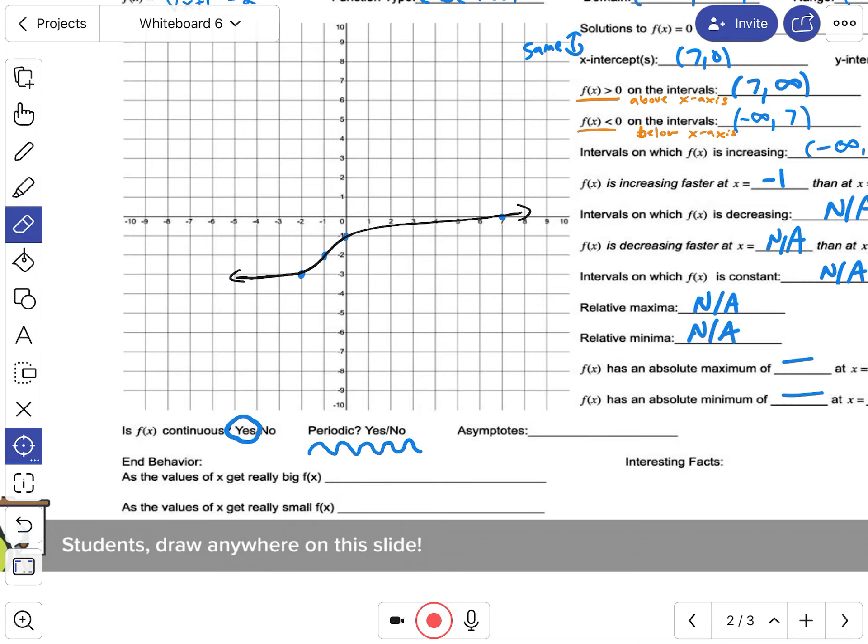There's no asymptotes. That exists for these types of rational functions where you have a vertical and horizontal asymptote. You also can have an asymptote with an exponential function where it starts off really slow and then it skyrockets. So that'll have a horizontal asymptote here. So yeah, this does not have an asymptote, so I'm going to put none.